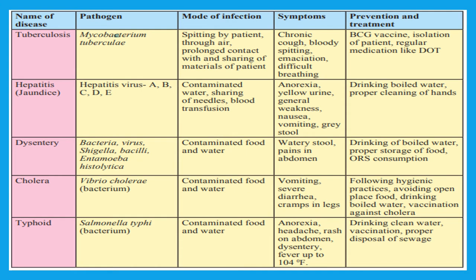In the textbook, one chart is given regarding disease name, then from which bacteria or virus that disease can occur, then the mode of infection of that disease, symptoms, prevention, and treatment. All these things are given for some diseases such as tuberculosis, hepatitis, dysentery, cholera, and typhoid. But we will take more information about each disease one by one.